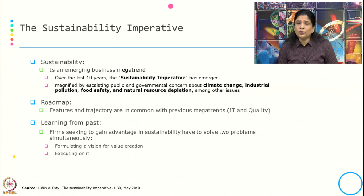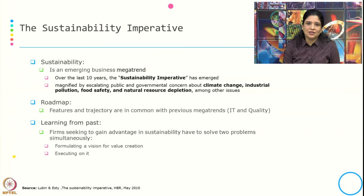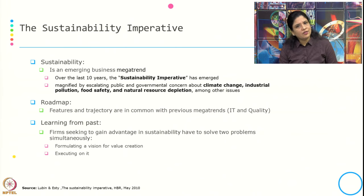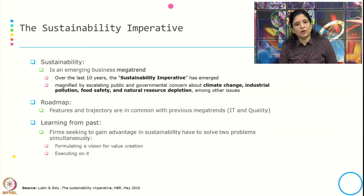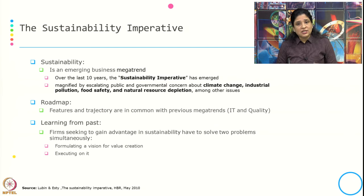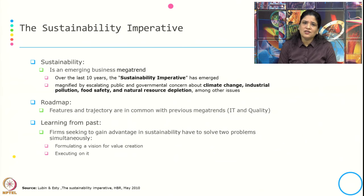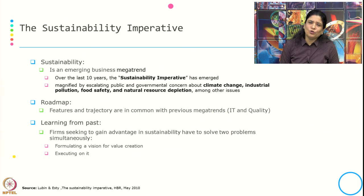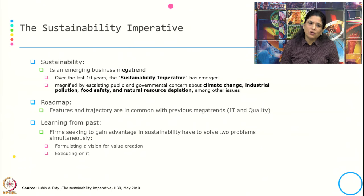Lubin and Esti also suggest that businesses need to learn from past mega trends. If they are seeking to gain advantage through sustainability, they have to solve two problems simultaneously. First, they have to formulate a vision for value creation, and second, they have to execute on it.